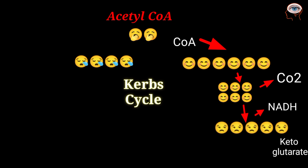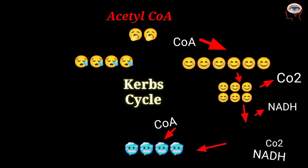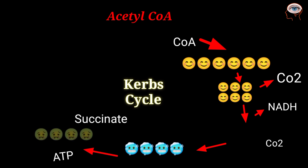In the next step, again NADH and CO₂ are released. The 4-carbon molecule forms, which picks up coenzyme A to form succinyl-CoA. Then the CoA of succinyl-CoA is replaced by a phosphate group, generating ATP. The 4-carbon molecule formed during this step is called succinate.